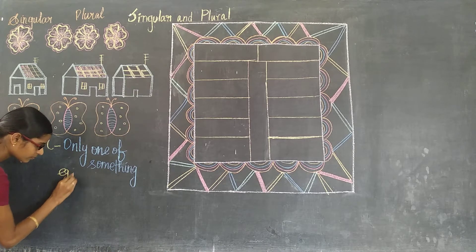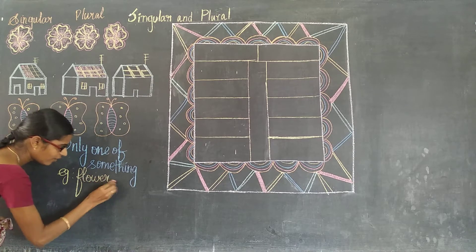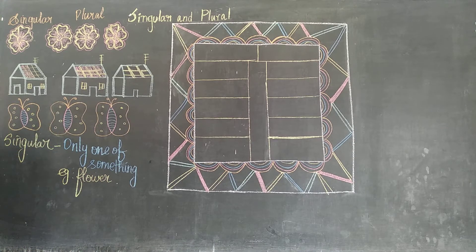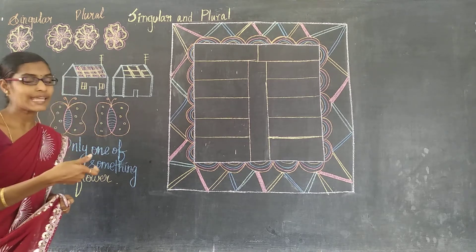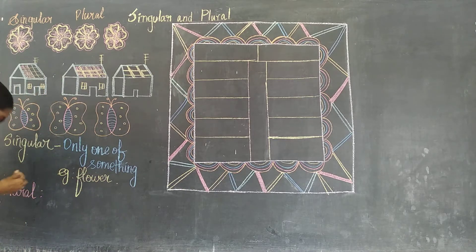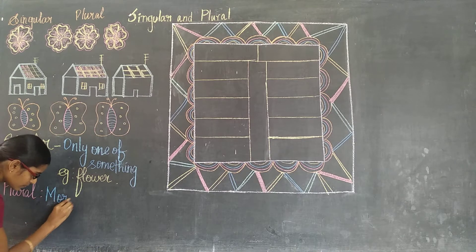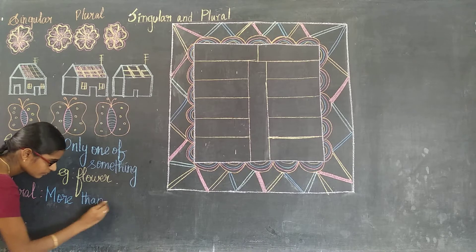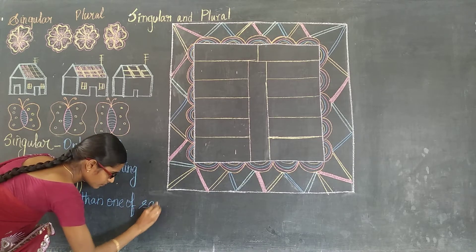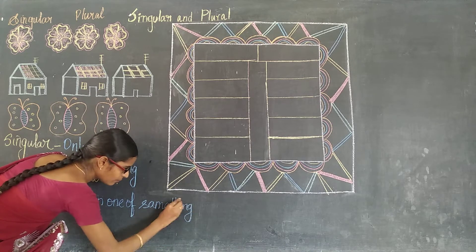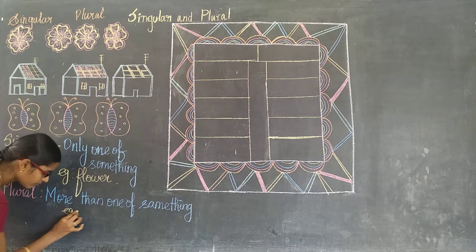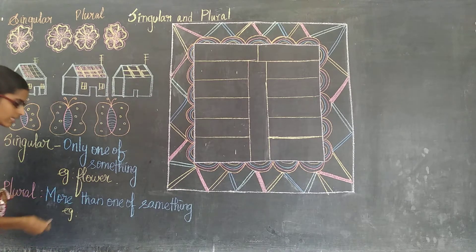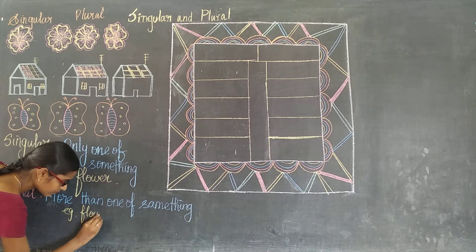More than one of the same thing is said to be plural. For example, let's have our first example — that is flower. And the definition for plural: plural means more than one of the same thing is said to be plural. For example, the plural form — flowers. Flowers.